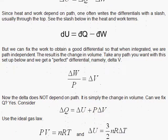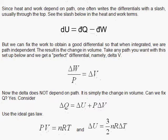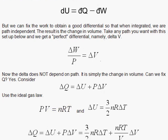And let's use the ideal gas law. We have delta U would be 3/2 NR delta T, and for PDV, we'll use the pressure is equal to NRT divided by V.